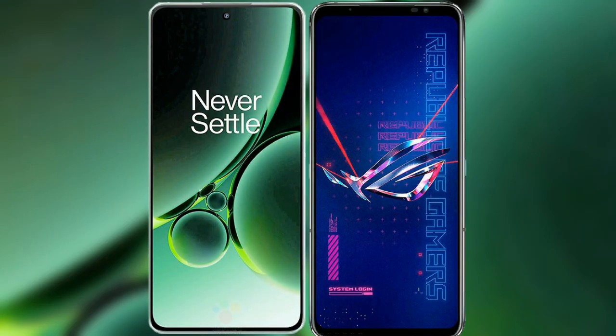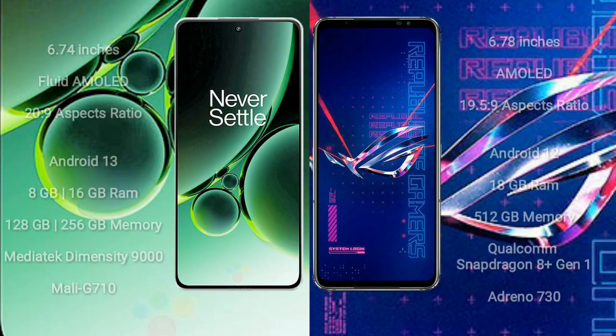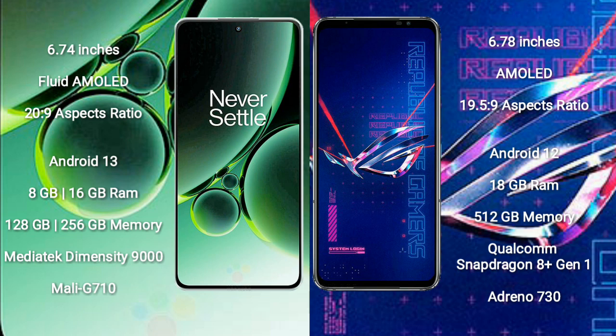I will compare the new OnePlus Nord 3 with the Asus ROG Phone 6 Pro. OnePlus Nord 3 comes with a 6.74-inch flat AMOLED display and aspect ratio 20:9. Asus ROG Phone 6 Pro comes with a 6.78-inch AMOLED display and aspect ratio 20:9.